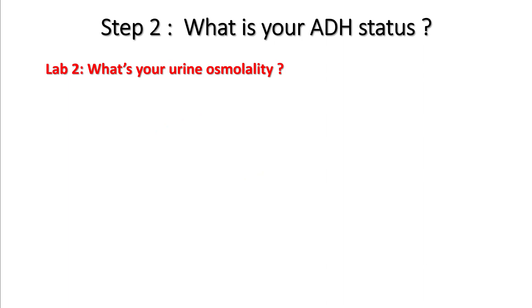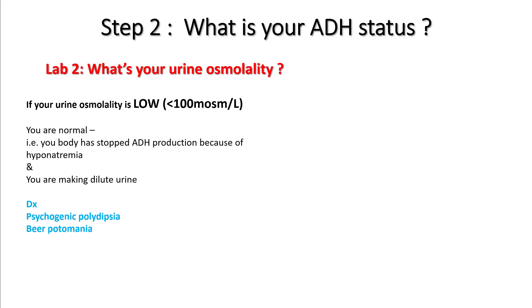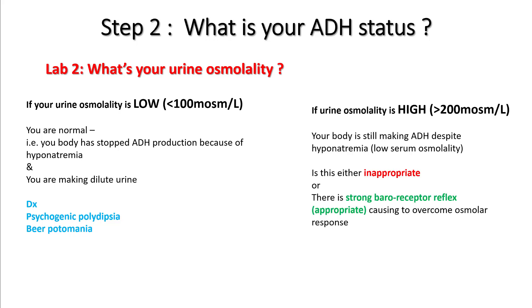Step two: ask what is the status of your ADH, and to do this you check your urine osmolality. If your urine osmolality is low — less than 100 milliosmol per liter — that's a normal response. That means your body is making dilute urine and your kidneys are functioning normally, so you are most likely drinking more water than solute. This will be seen in psychogenic polydipsia and pure potomania. If your urine osmolality is high — more than 200 milliosmol per liter — that means your body is still making ADH despite low sodium, which can be either an inappropriate or appropriate response from a strong baroreceptor reflex.